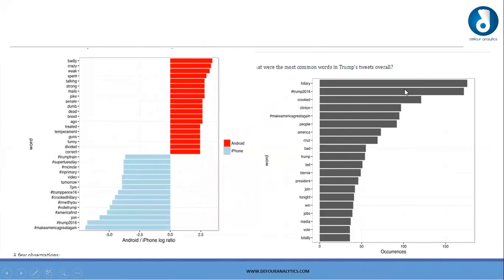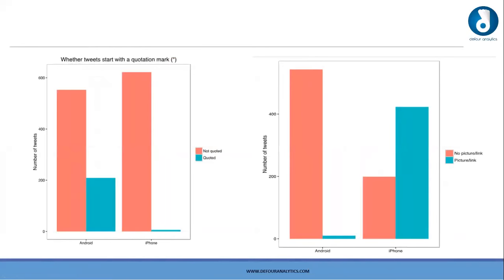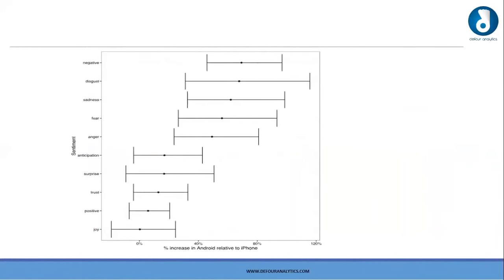From the analysis, words he mostly used on Android include: badly, crazy, weak, Spain, strong. On iPhone he mostly used hashtags — for example, 'Tomorrow 7 PM, Trump in primary.' The most used terms in the campaign were 'Hillary' and 'Trump 2016.' We can also know how many tweets used exclamation marks, which device they were tweeted from, and how many tweets had pictures versus without. The final chart shows the campaign sentiment — positive or negative — and the levels of sadness and fear among people, including the compound score and percentage increase from Android to iPhone.